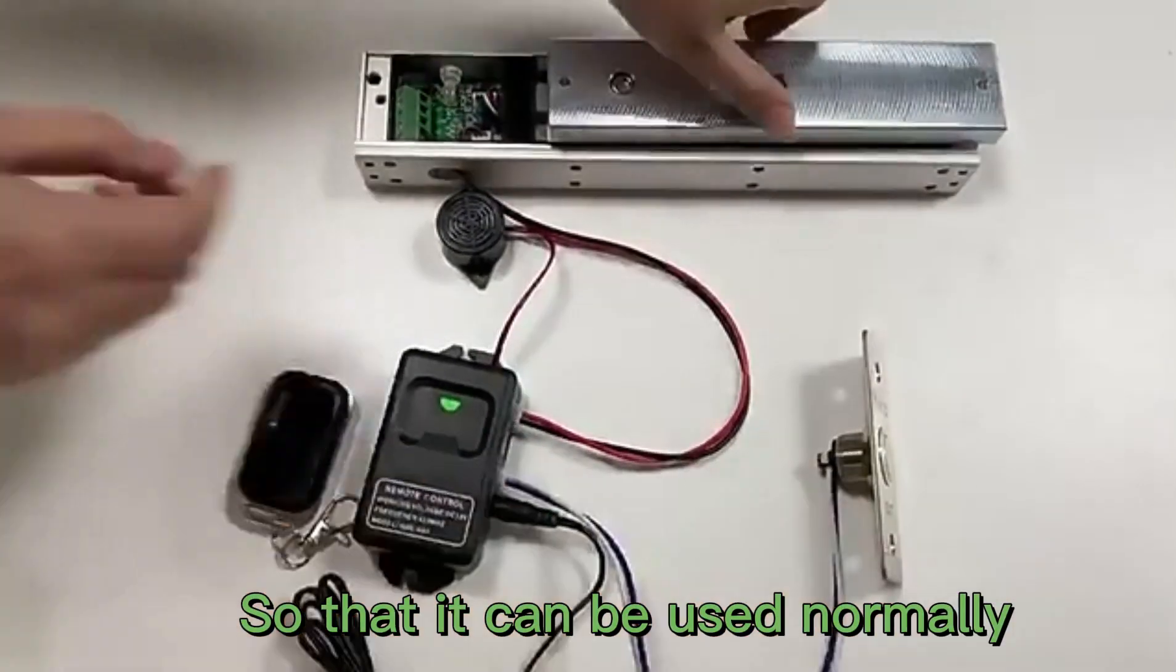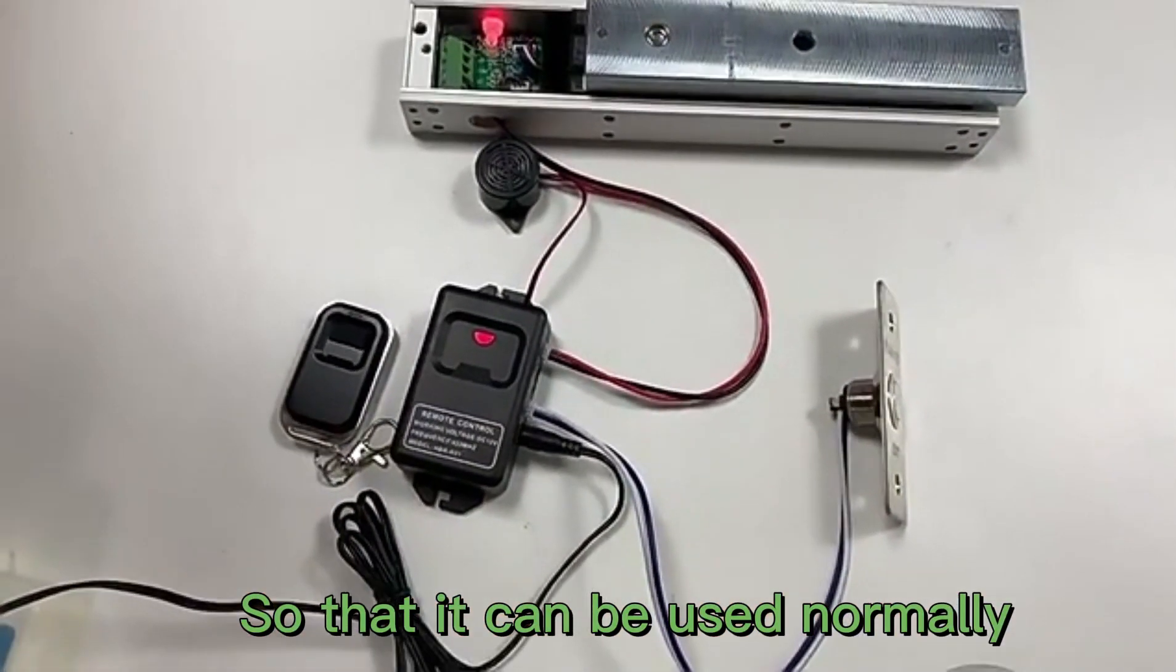When you press the exit button, the lock will unlock too. The LED keeps green to indicate unlock, and red to indicate the lock is closed.